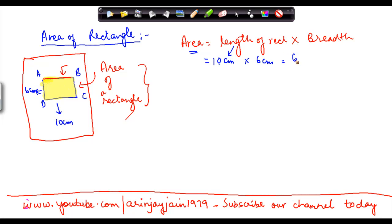So 6 multiplied by 10 will give you 60, and cm multiplied by cm will give you cm². So the area is always mentioned in cm².